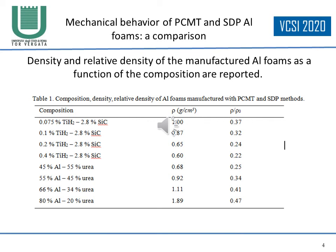In the table, density and relative density of the manufactured aluminum foams as a function of composition are reported — lines 1 to 4 for PCMT foams and lines 5 to 8 for SDP foams.